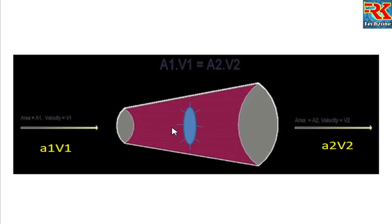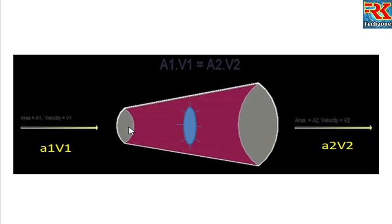Now, the continuity equation for the draft tube is: discharge in the flowing pipe is constant. So discharge Q is equal to A1V1, which is equal to A2V2. At the inlet the area is A1 and velocity is V1; at the outlet the area is A2 and velocity is V2. Discharge is equal to A1V1 = A2V2.